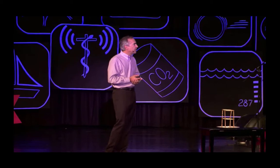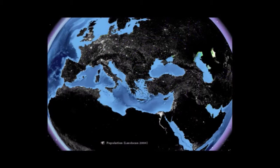Now let's look at population — just the population density that we have today. Here is the population of Europe and North Africa. And until I saw this globe, I hadn't appreciated that Egypt is not a country, it's a river. It's just a river of humanity in inky blackness; there's nothing else.